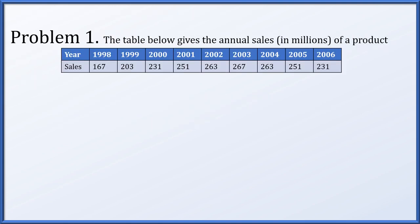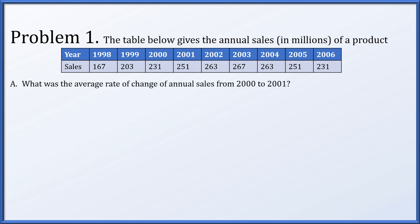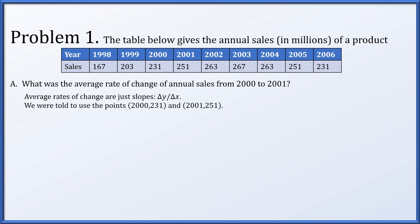In problem one, we have a table that gives the annual sales in millions of a product. First, we want to determine the average rate of change of annual sales from 2000 to 2001. The average rate of change is just a slope — delta y over delta x. The two points we need are x equals 2000 to 2001, with associated y values 231 and 251. Delta y is 20, delta x is 1, giving an average rate of change of 20 million dollars per year.